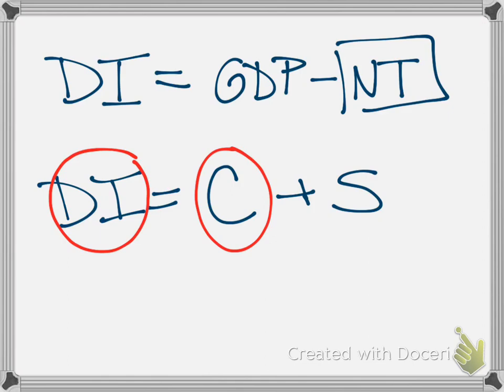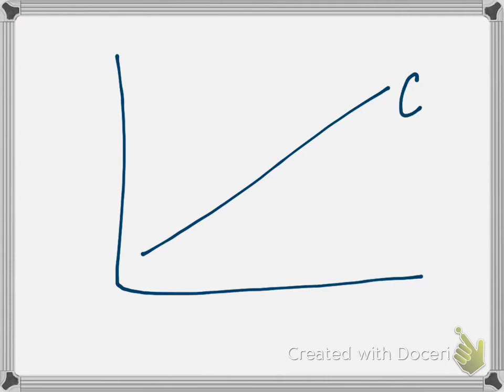It's a graph that looks something like this. It is an upward sloping line, labeled here with a C, and it's showing the relationship between real consumption here on the vertical axis, and down here, real disposable income.